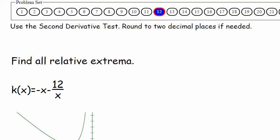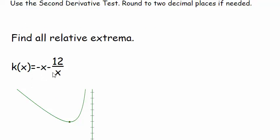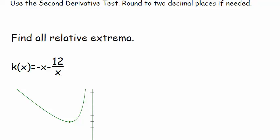Alright, so let's write this down. K of x equals negative x minus 12 over x. Let's bring up the whiteboard. Minus 12 over x.